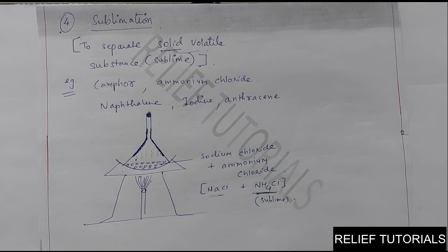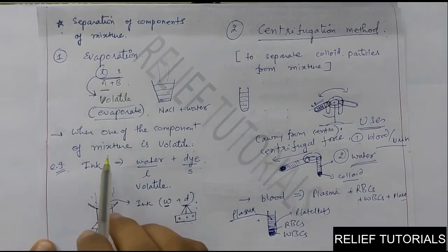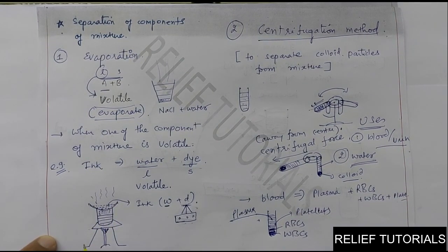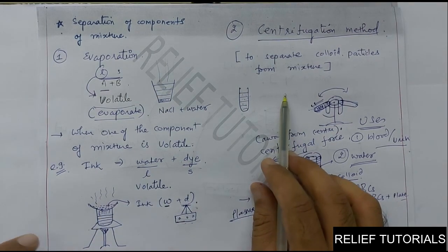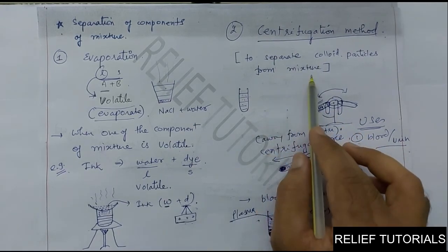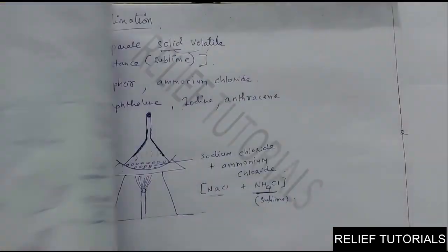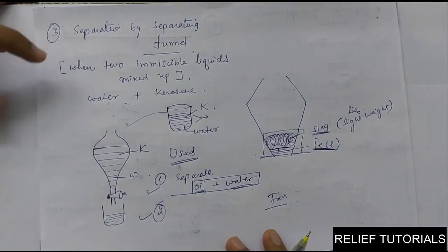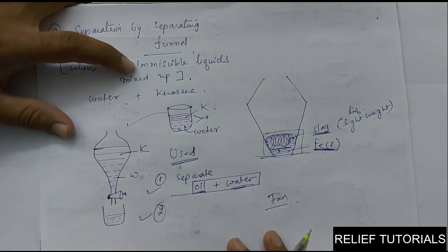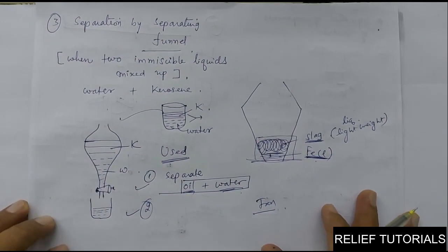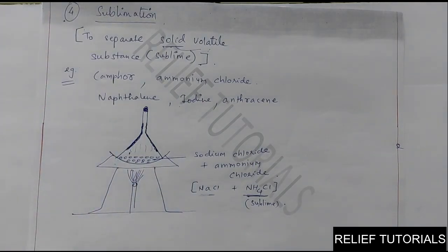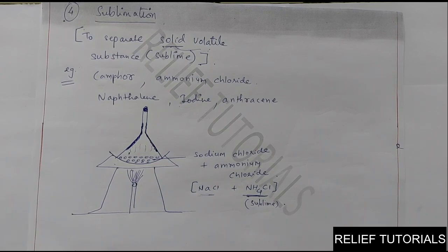So these are the four different methods we have seen today. The first method was evaporation — used to separate a liquid volatile substance from a mixture. The second was centrifugation — used to separate colloid particles from a mixture. The third was the separating funnel method — for two immiscible liquids that do not mix because of the vast difference in their densities. The fourth was sublimation — when a sublime, meaning a solid volatile substance, is mixed in. We still have more methods, which we will see in the next session. Keep practicing, make notes. Thank you and best of luck.